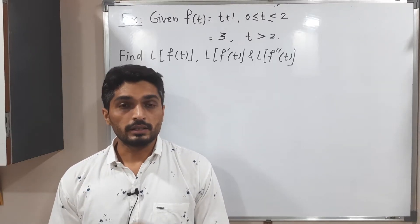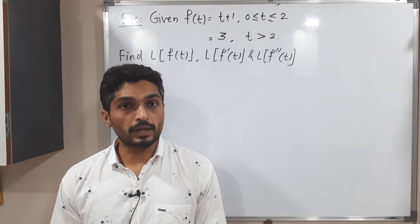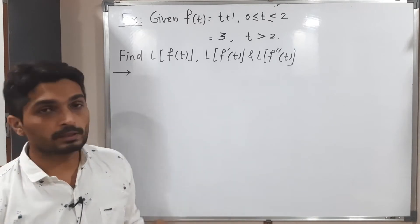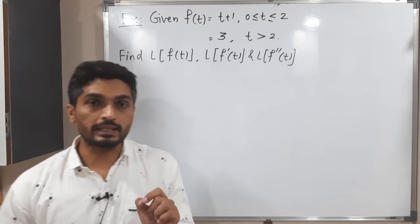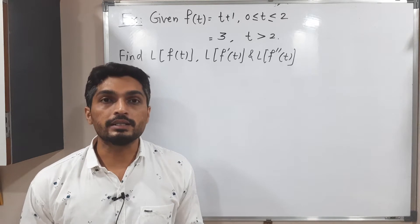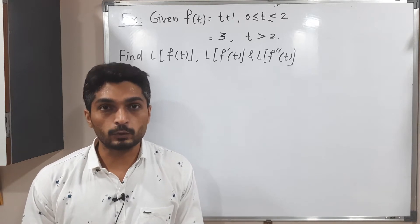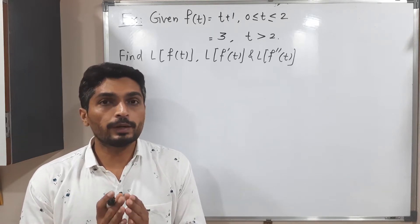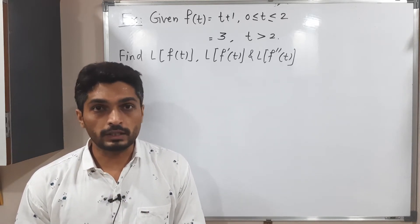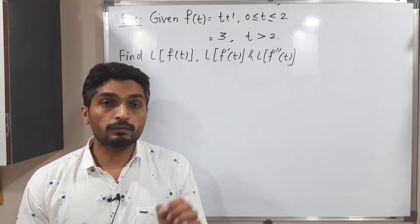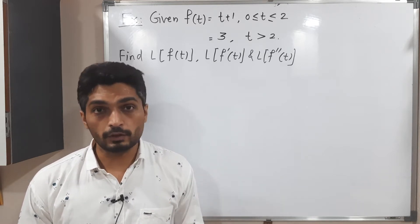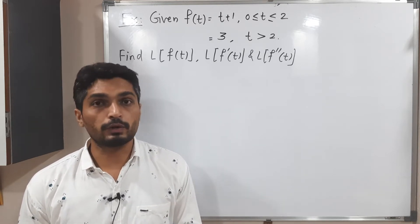Let us discuss this example. We have a function f of t equal to t plus 1 when t lies in 0 to 2, and it is equal to 3 when t is greater than 2. What we have to find is: the Laplace of f of t, the Laplace of the derivative of f, and the Laplace of the double derivative of f.